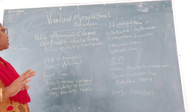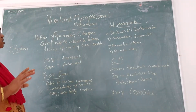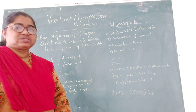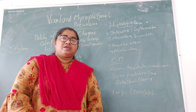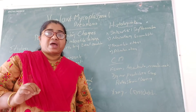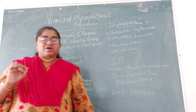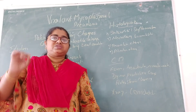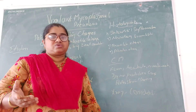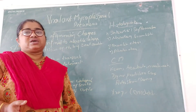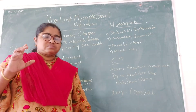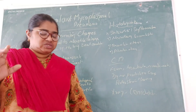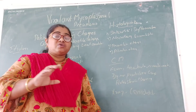In this pneumonia, it is definitely patchy inflammatory changes. Viral pneumonia is characterized by patchy inflammatory changes confined to the interstitial tissue of the lung. When you take an X-ray, you can see these patchy inflammatory changes, which are confined to the interstitial tissue.